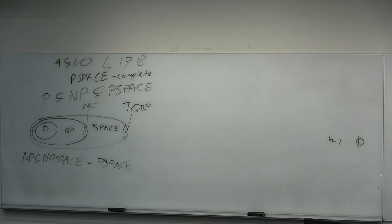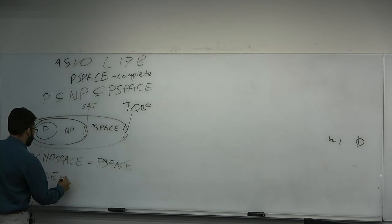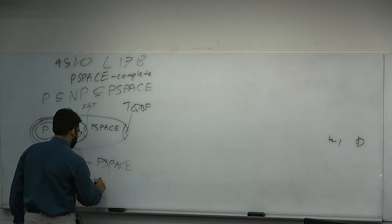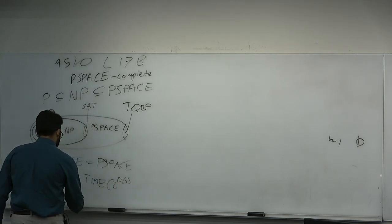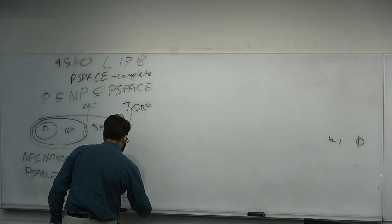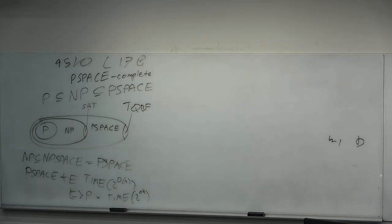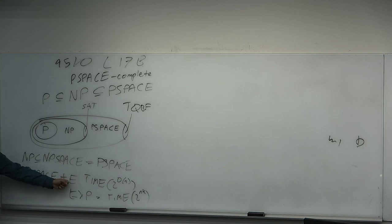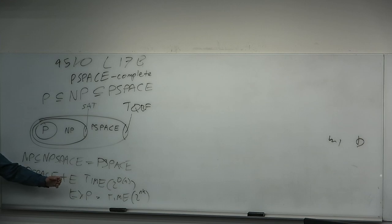You could not put all of NP in linear space, because linear space is not closed under polynomial time reduction. As an exercise, prove that PSPACE does not equal E, where E is linear exponent time 2^O(N). EXP is 2 to the polynomial exponent — the polynomial time closure of E. We can prove PSPACE does not equal E without knowing which one is bigger.